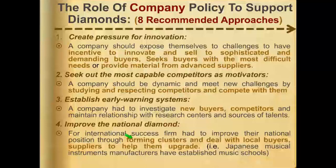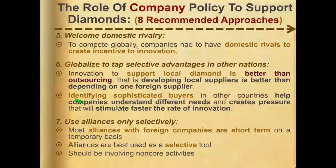We also have the role of the company, with eight recommended approaches for company policy. The first is to create pressure for innovation. The second is to seek out the most capable competitors as motivators. Other approaches include establishing early warning systems, improving the national diamond, welcoming domestic rivalry, globalizing to tap selective advantages in other nations, and using alliances selectively.